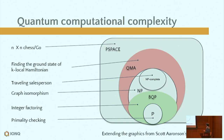For example, integer factoring resides in BQP, meaning there is an efficient quantum algorithm for it — you can break public-key cryptography — but there is no efficient classical algorithm for it yet. I'd also like to highlight quantum algorithms based on their impact on generating subsequent research funding. Initial funding was triggered by early works from Feynman, Peter Shor's factorization algorithm, and Grover's database search algorithm — building the foundation of quantum algorithms.